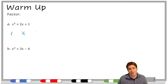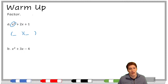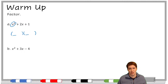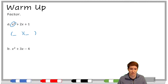This is basically like the opposite of foiling. We take the x squared, the first term, and split it up into these two spots. The only way to really split up x squared — there are two ways: you could split it into 1 times x squared, or x times x. We do x times x because that's what's going to help us get the 2x in the middle.